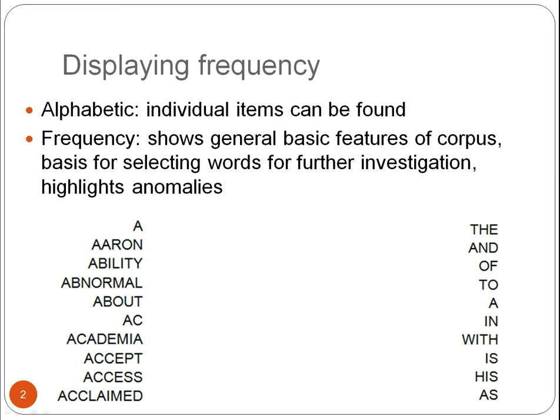An alphabetic list like the one on the left is useful because individual items can be found easily, and you can also use this list to check for spelling variation or spelling errors. Ordering according to frequency, on the other hand, shows you the general features of a corpus and can be the basis for selecting words for further investigation. It can also highlight anomalies in your corpus.